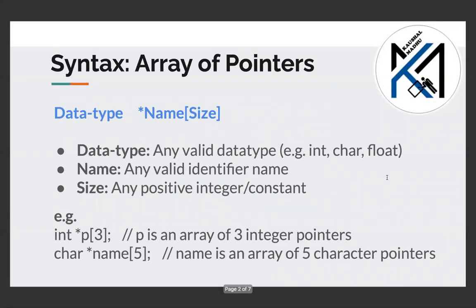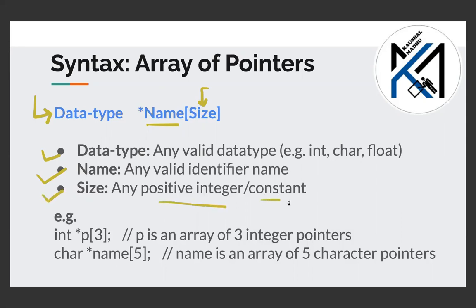The syntax of the array of pointers is: data type, star, name, and size. The data type is a valid data type such as integer, character, or float. The name is a valid identifier name, and the size is a positive integer or constant.